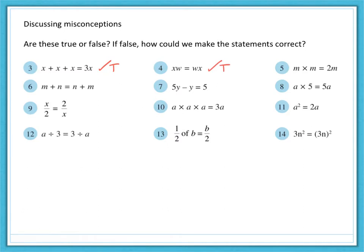Number five, m times n is not equal to 2m, so that is indeed false. M times m is equal to m squared. Now, if we were to do m plus m, that would give us an answer of 2m. Number six, m plus n is equal to n plus m. That's true.